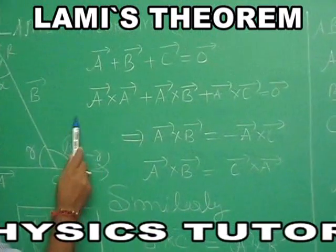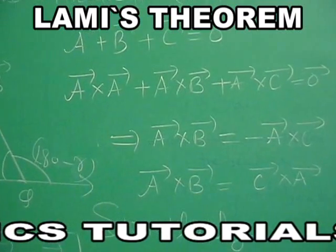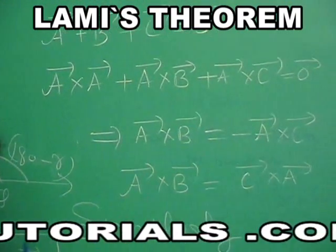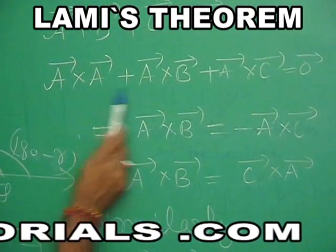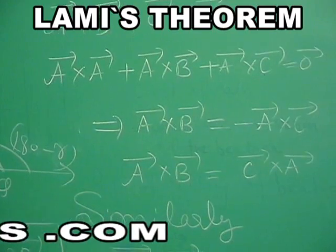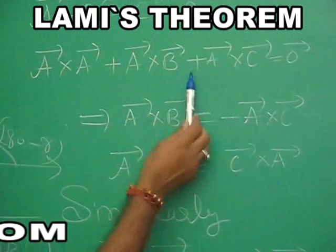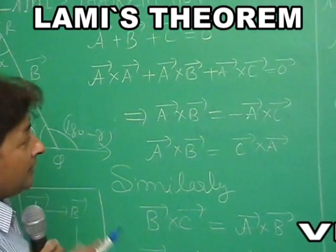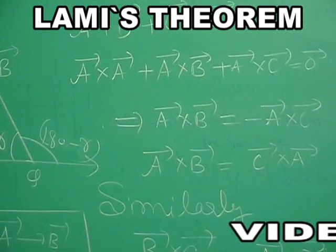Now, multiplying with the vector a according to the cross product: a cross a, a cross b, a cross c. Remember students do not change the order, if you put a here, a here, a here. Sometimes we do by mistake, we write b first a, c first a. Well, that is not in accordance with the vector product.